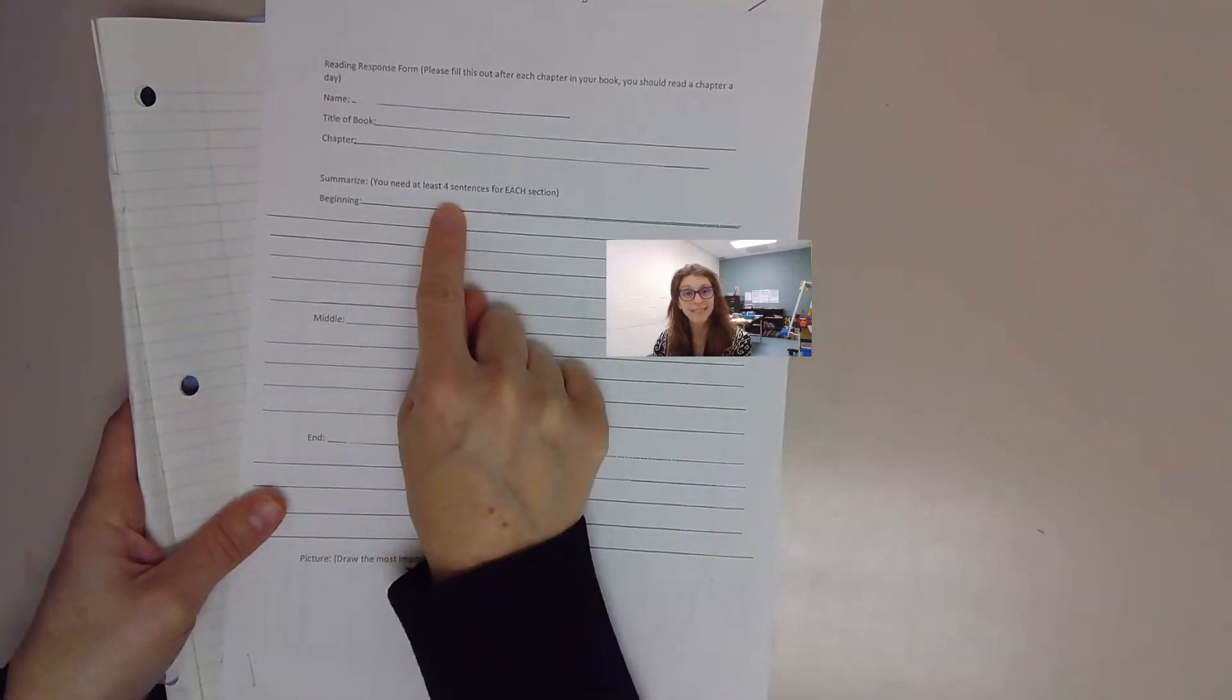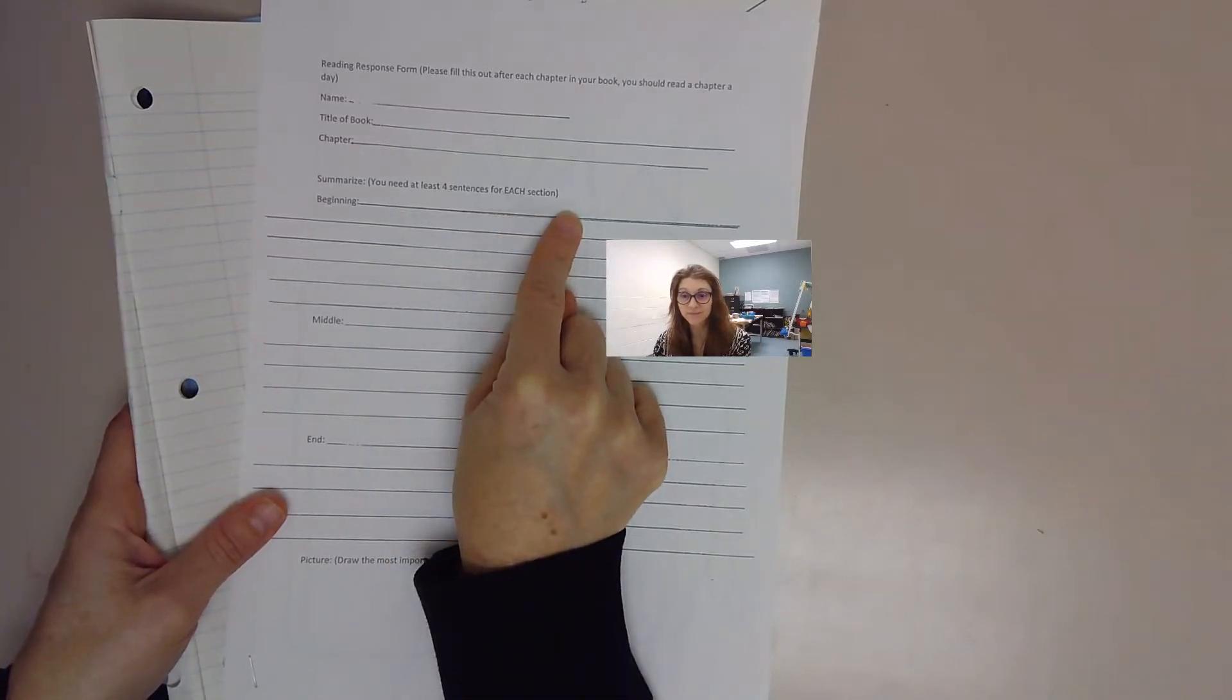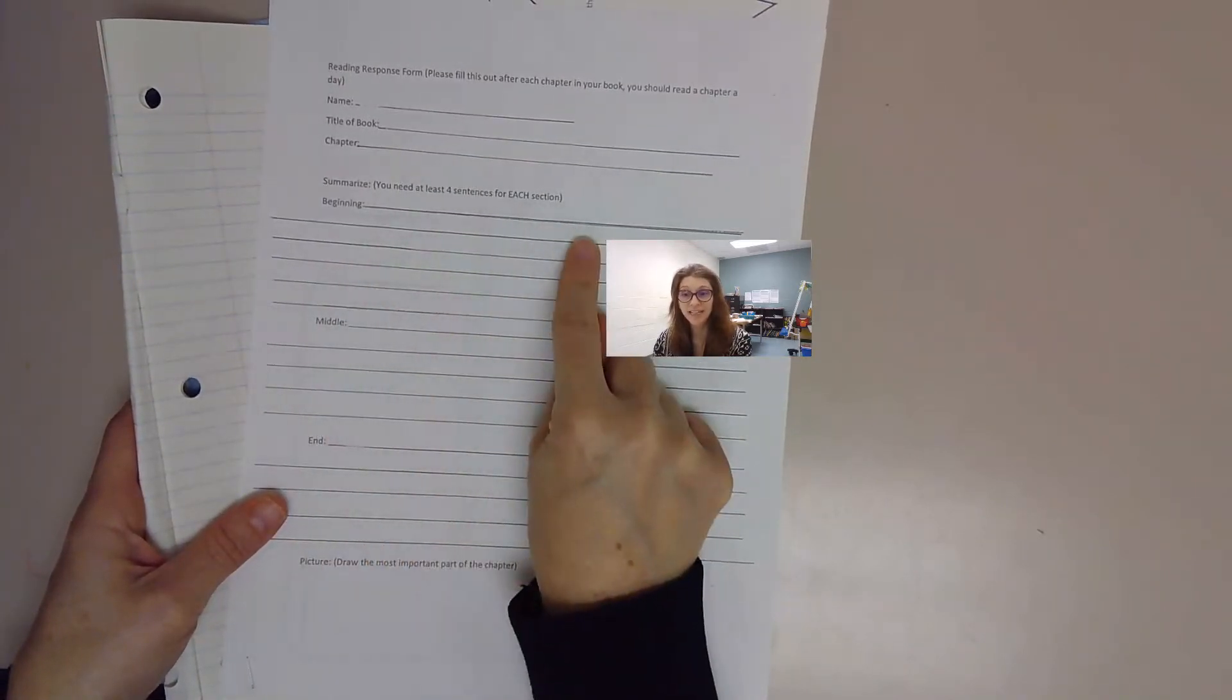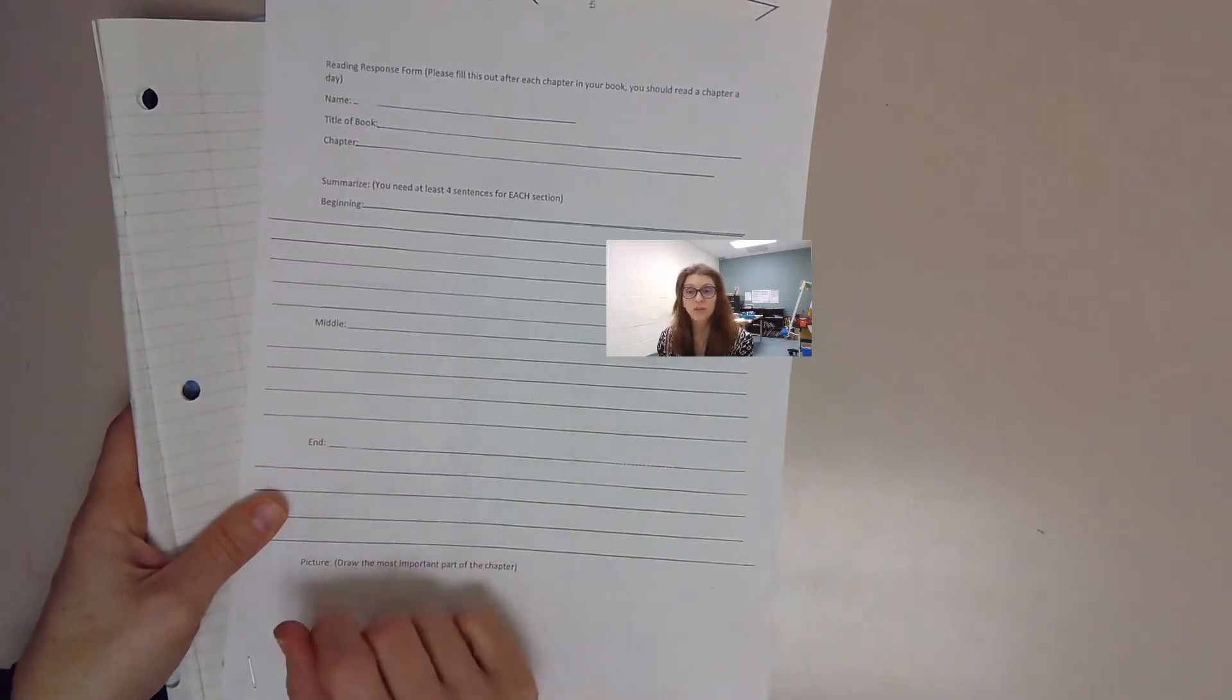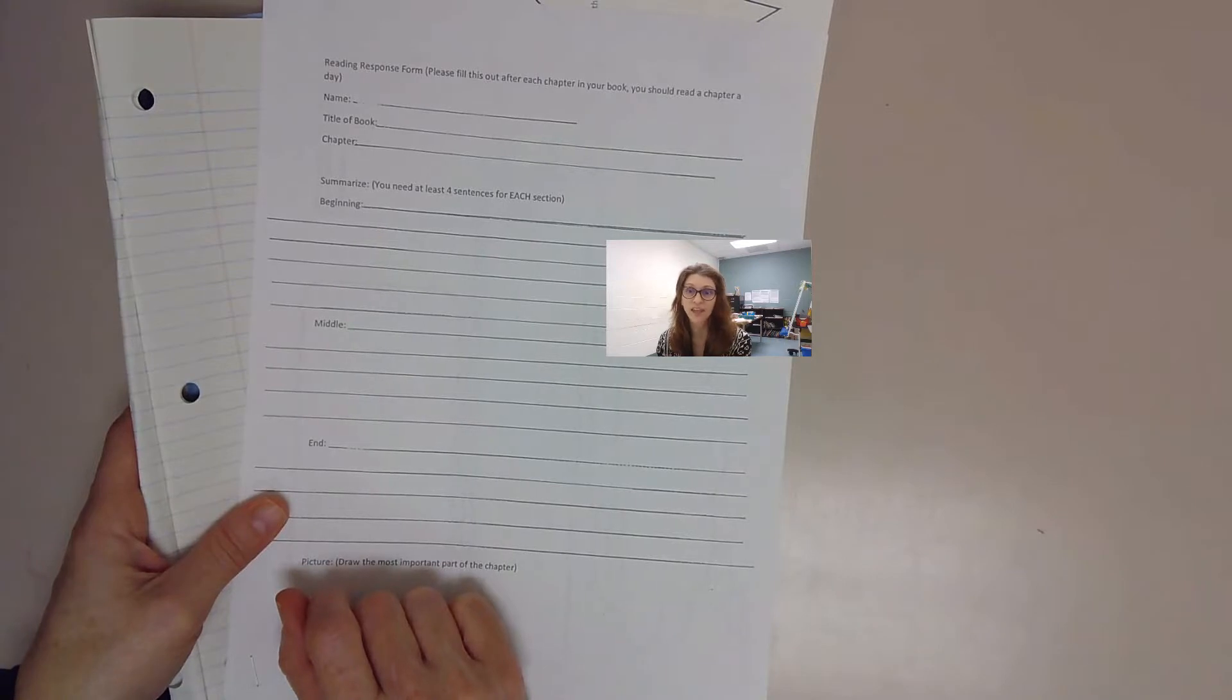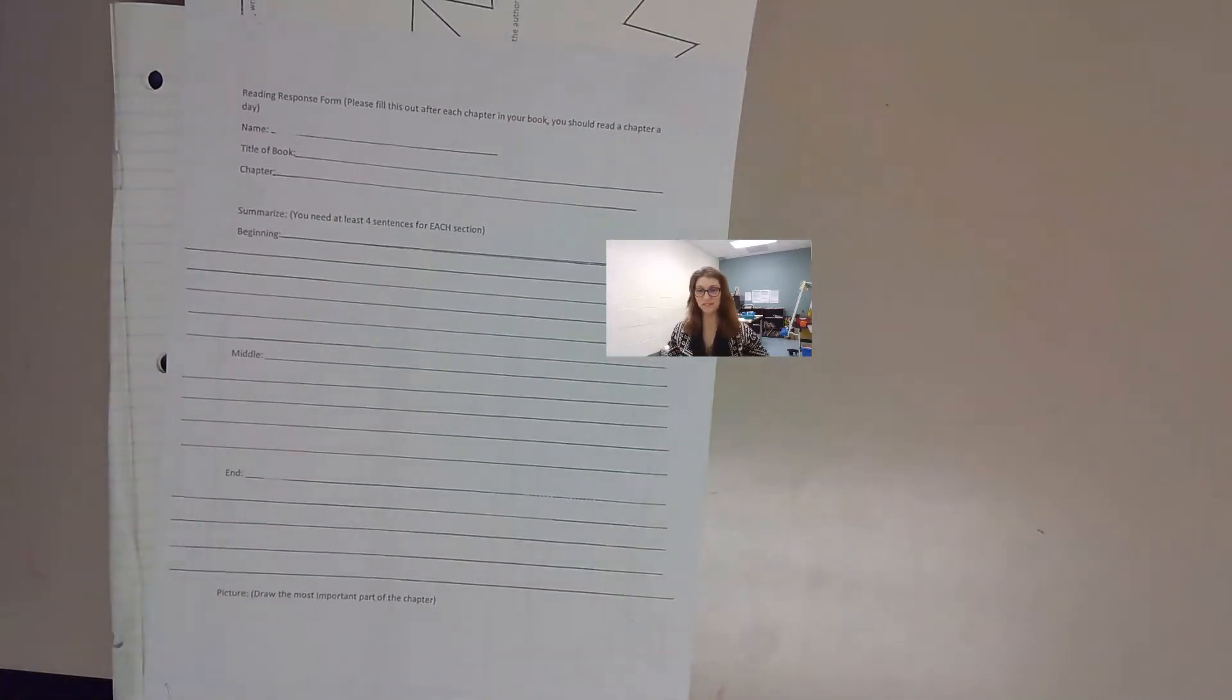You need at least four sentences for each section: first, next, after that, then after that, finally. Think of the sentence starters that you're going to use. Don't start every sentence with then, then, then. All right, let's get reading though, put that to the side.